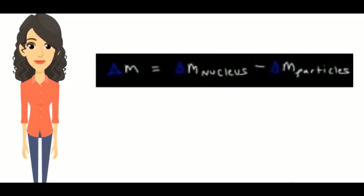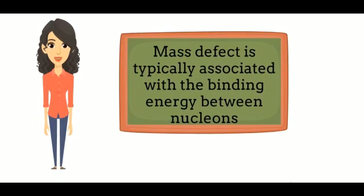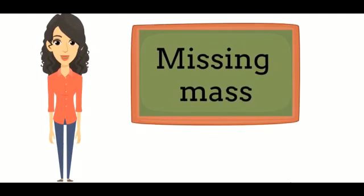Mass defect is represented by this formula. Mass defect is typically associated with the binding energy between nucleons. It is the energy released by the formation of atomic nucleus.